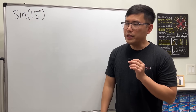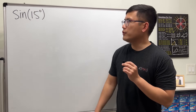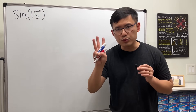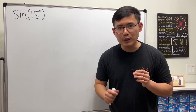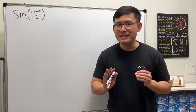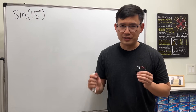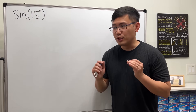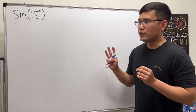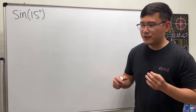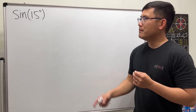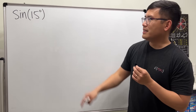Today let's talk about how we can get the exact value for sine of 15 degrees. I'll show you three ways to do it and we'll end with three different-looking answers, but they are all the same in terms of their values — they just look different. In this video I will demonstrate the three ways, and then in the following video I will show you why they are all the same.